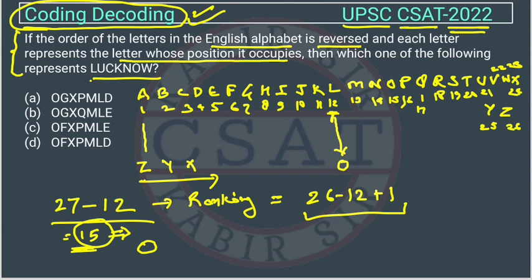Similarly, we will find out about U. U is at position 21. So 27 minus 21 is equal to 6. At position 6 we have F.